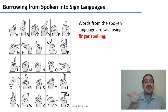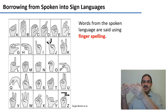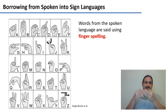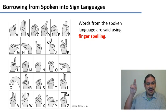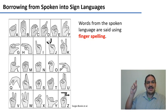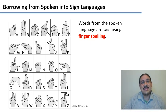This is where fingerspelling comes in. As you can see, this is the fingerspelling from ASL. It's a way to import words from a written representation into a sign language. My name in ASL fingerspelling would be R-O-L-A-N-D-O. Please try to sign your name — please pause the video.